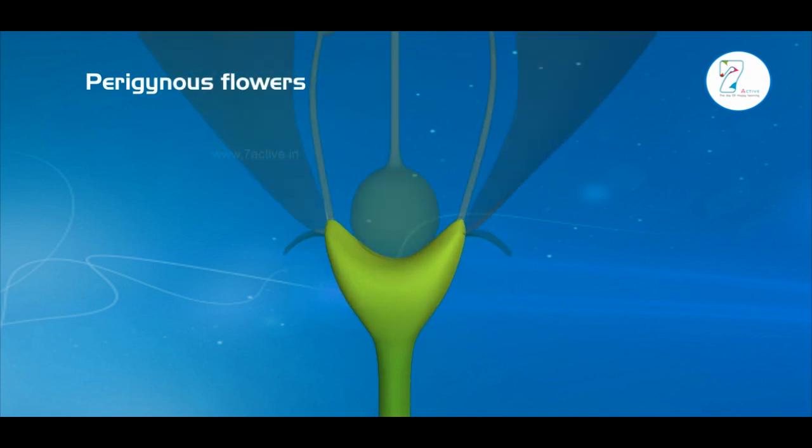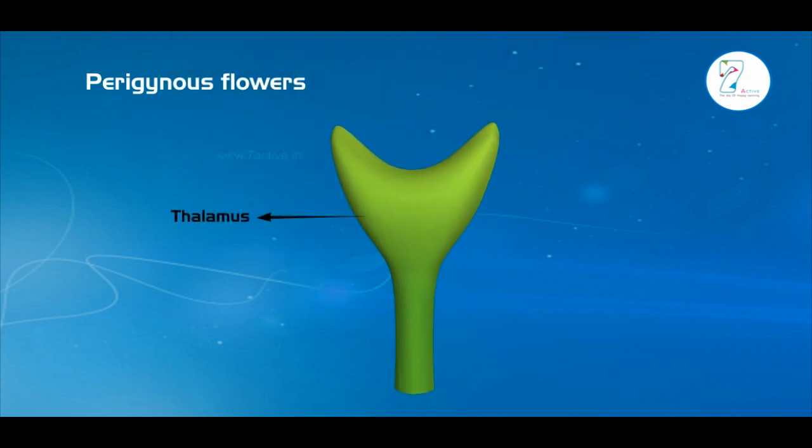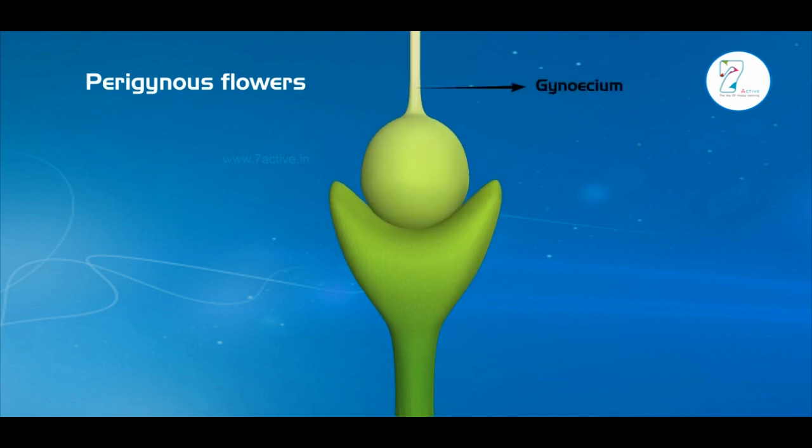2. Perigynous flowers. Thalamus is concave or saucer-shaped. The gynoecium is located centrally in the thalamus.